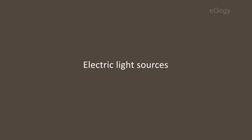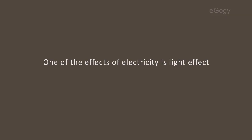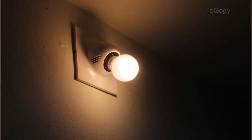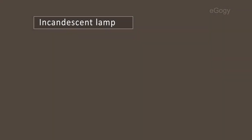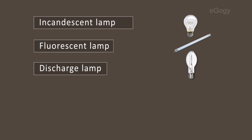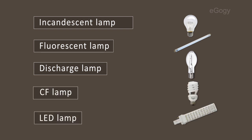Electric Light Sources. One of the effects of electricity is light effects. In our daily life, we use different types of electric lamps. Let's see what they are: incandescent lamp or filament lamp, fluorescent lamp, discharge lamp, CFL lamp, LED lamp, etc.